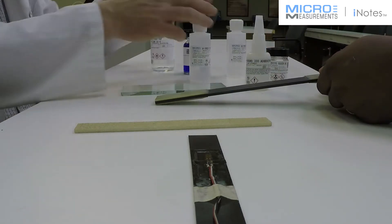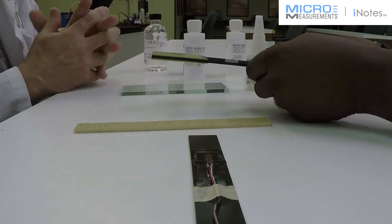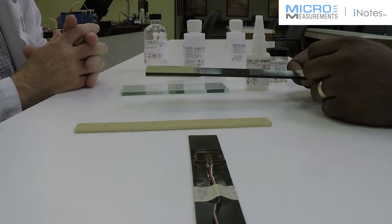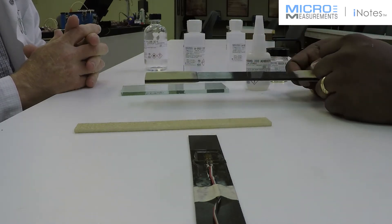What about surface preparation, conditioner, neutralizer, degreaser, what are those things? Sure. In terms of degreasing, we generally would use GC-6 instead of some of the more aggressive degreasers that are out there.